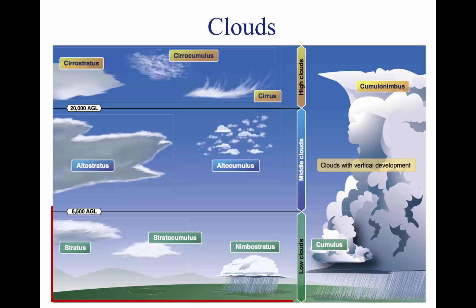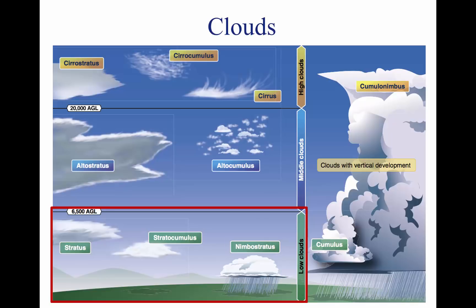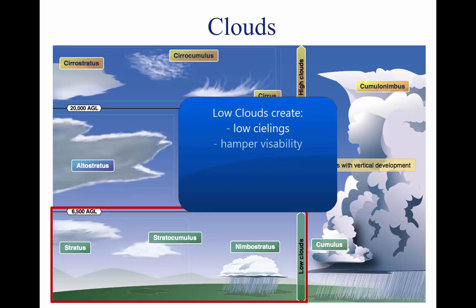Low clouds are those that form near the Earth's surface and extend up to 6,500 feet AGL. Typical low clouds are stratus, stratocumulus, and nimbostratus. Fog is also classified as a type of low cloud formation. Clouds in this family create low ceilings, hamper visibility, and can change rapidly. Because of this, they influence flight planning and can make visual flight rules, VFR, flight impossible.